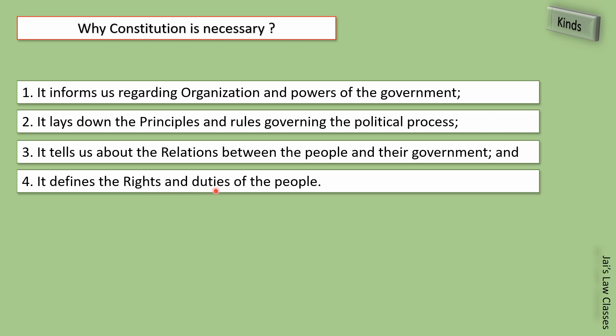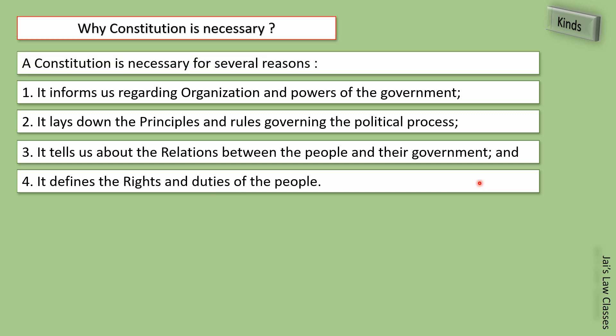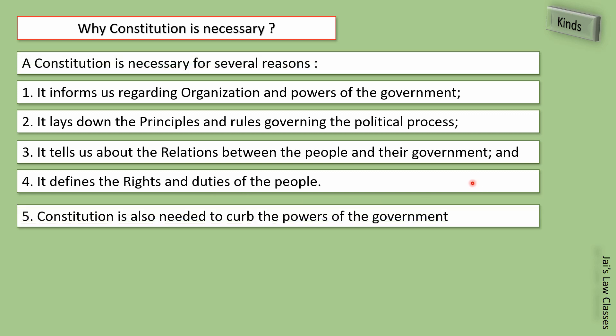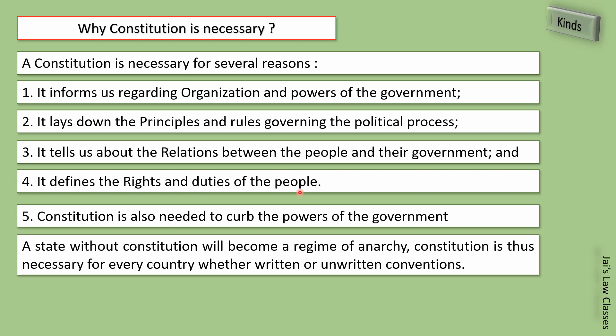A constitution is also needed to curb the powers of the government. If the government is not controlled, it becomes a dictatorship. Therefore, to control this power, the constitution is necessary — the government must operate within the constitutional boundary. A state without a constitution will become a regime of anarchy. Constitution is thus necessary for every country, whether written or unwritten.